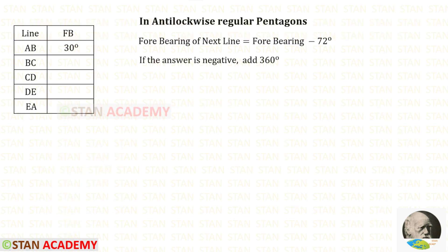In anticlockwise regular pentagons, the formula to find the forebearing of the next line is forebearing minus 72 degrees. If we get the answer as negative, we have to add 360 degrees.